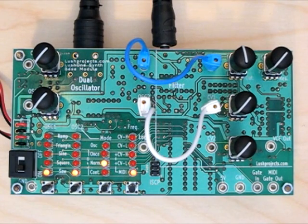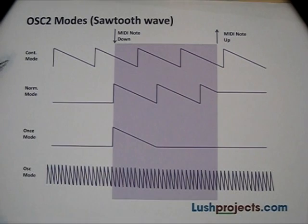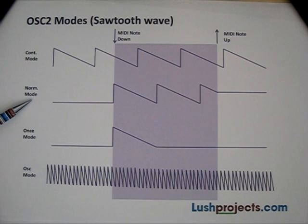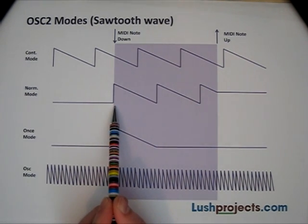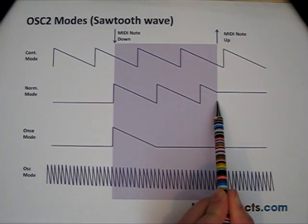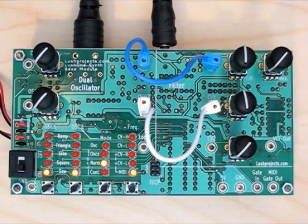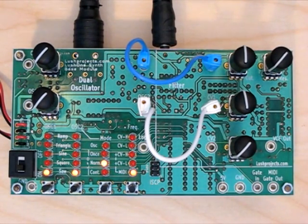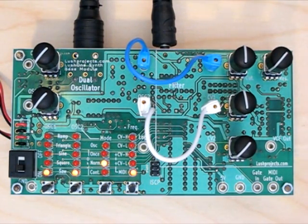One additional control for the second oscillator is the third button, which sets the oscillator mode. There are three low frequency modes and one additional mode. The default mode is called 'norm' for normal. In this mode the oscillator is always reset at the start of a note and is turned off when the MIDI note is released. The note always starts the same, the LFO repeats if you hold the note down, but nothing happens when you release the note.